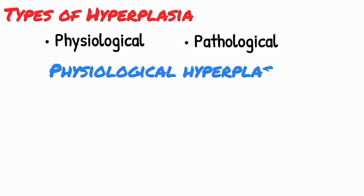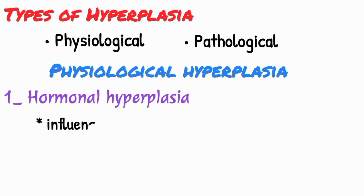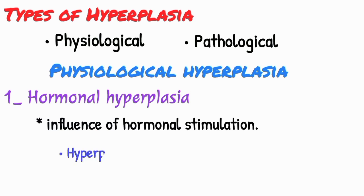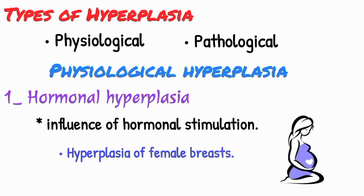Hyperplasia can be physiological or pathological. Physiological hyperplasia can be further divided into two main types. First is hormonal hyperplasia, which occurs under the influence of hormonal stimulation. For example, hyperplasia of the female breast at puberty, during pregnancy, and lactation.